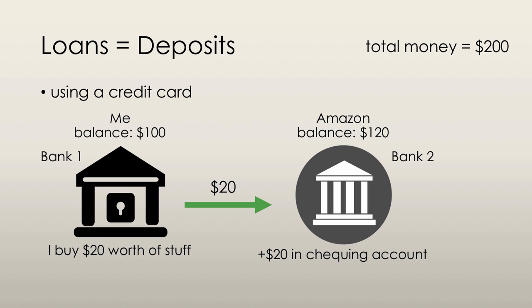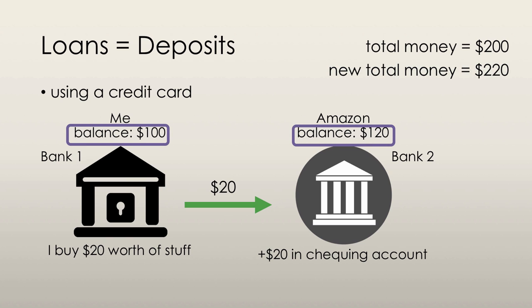In the beginning, we had a total amount of $200 in the economy. But now, my bank balance is still $100, while Amazon's bank balance has increased by $20. So the new total money in the economy is $220. I've not actually used my money to pay for my purchase from Amazon — that is a loan that's been used to pay Amazon. But money has still been created; we have more money in the economy now than we used to. So money has been created by making this loan.